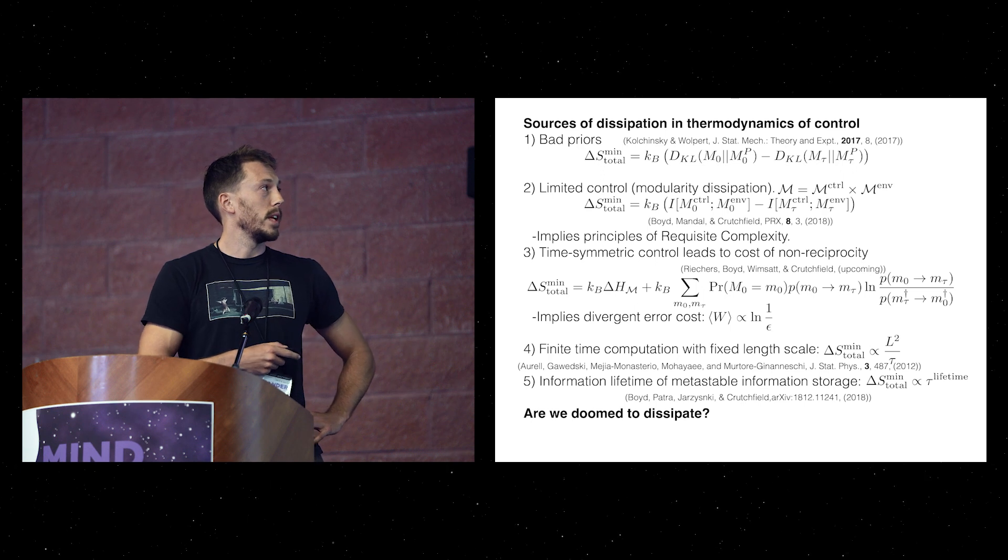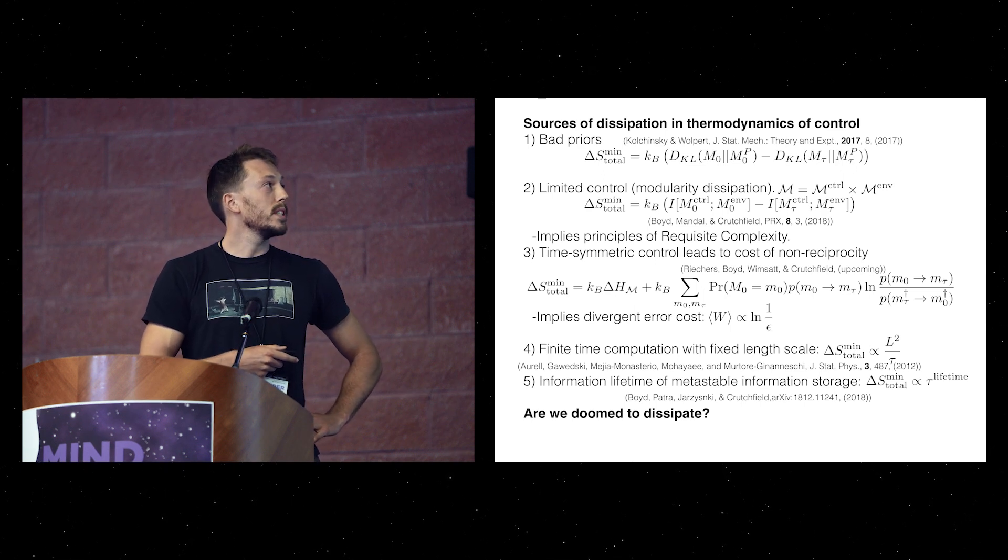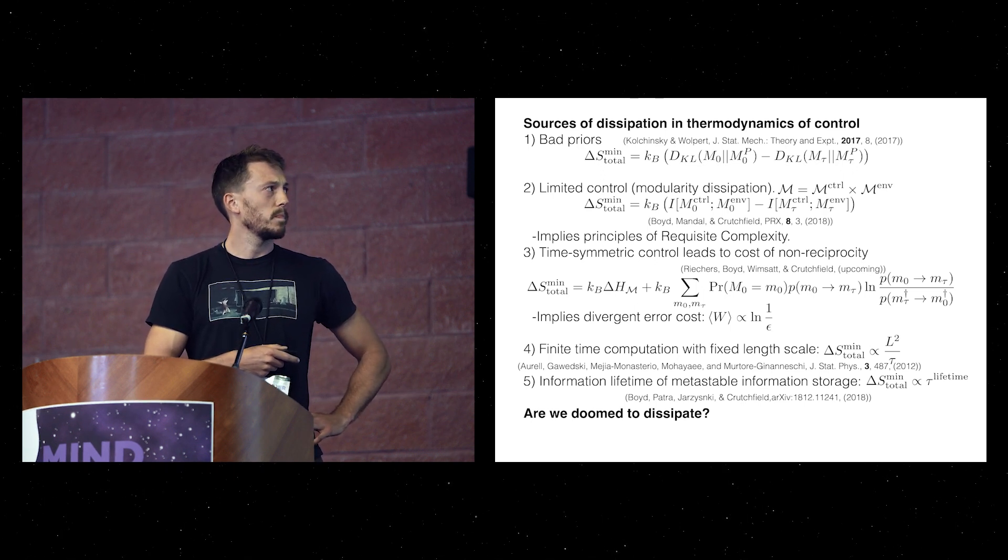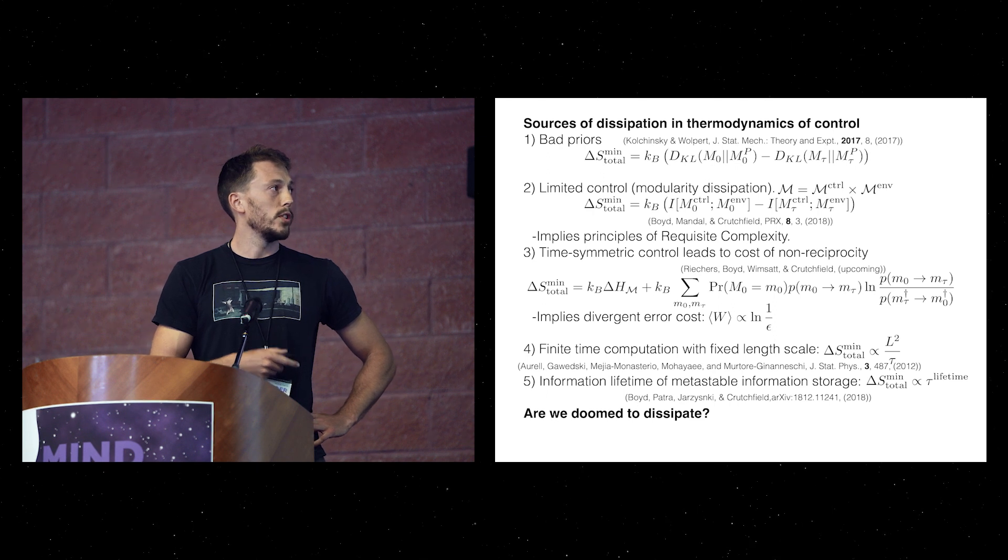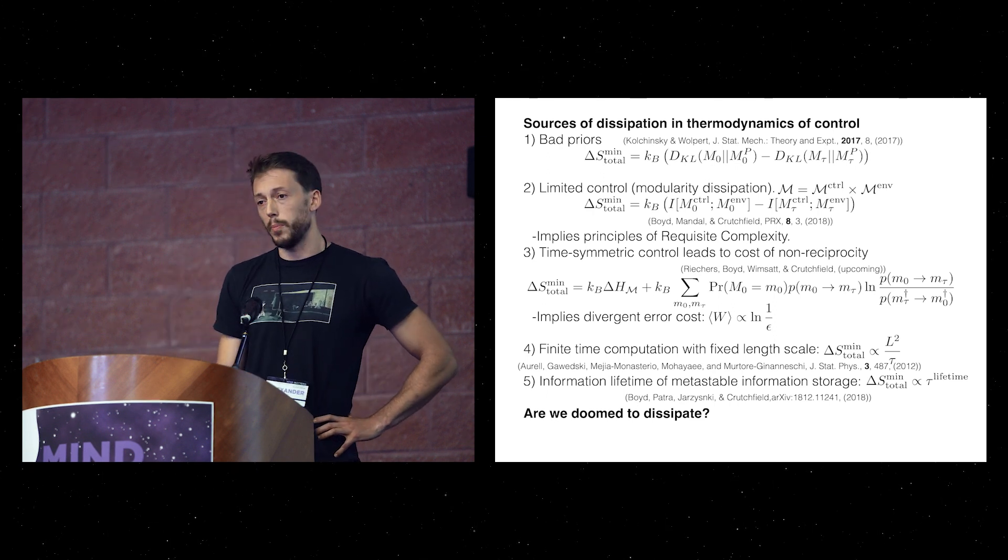Another source of dissipation we found recently is that if you are constrained to control time symmetrically, which is the case for a lot of modern computers, the dissipation scales as the non-reciprocity of your computation, which is essentially the non-self-invertibility of it.